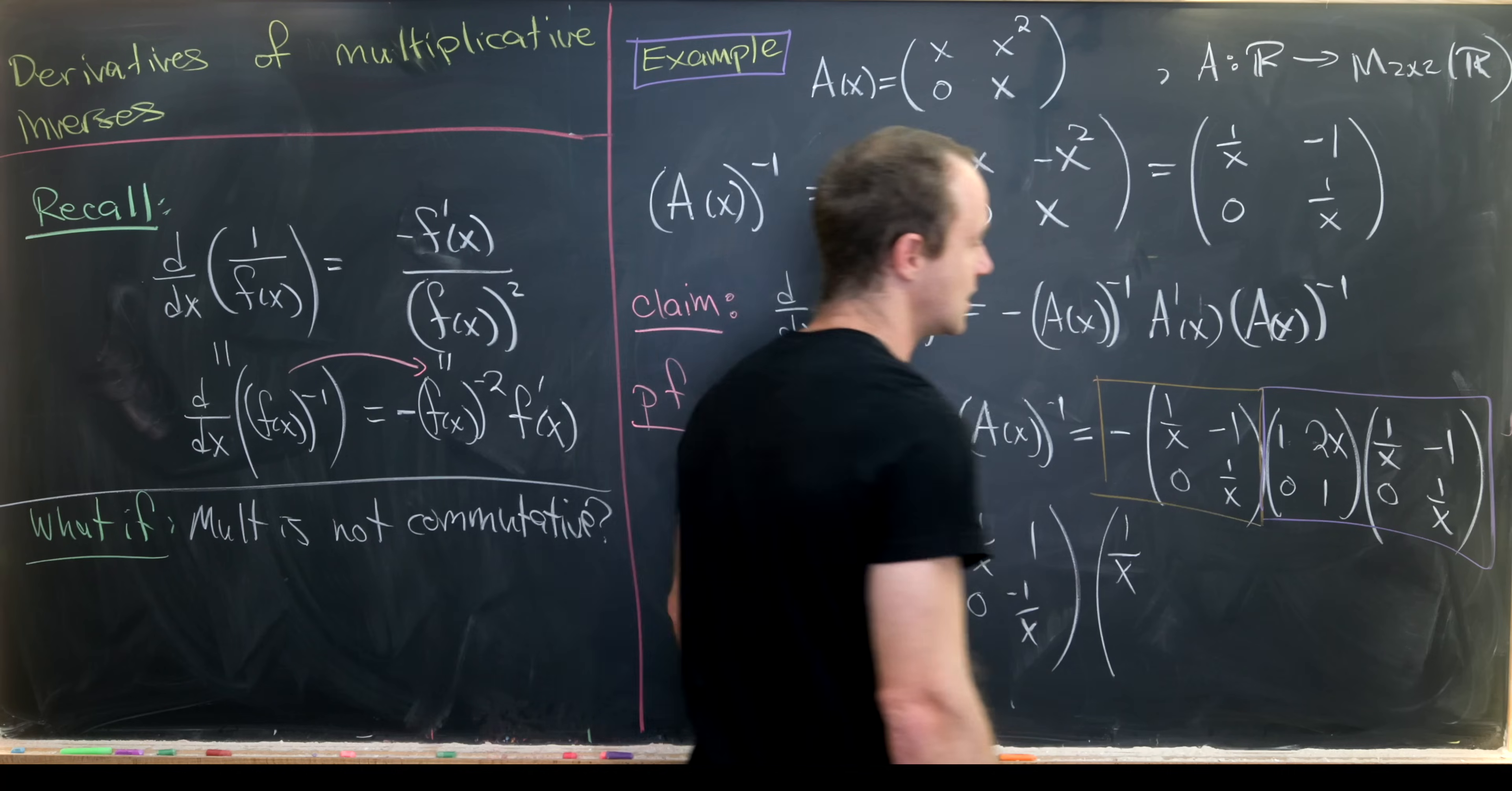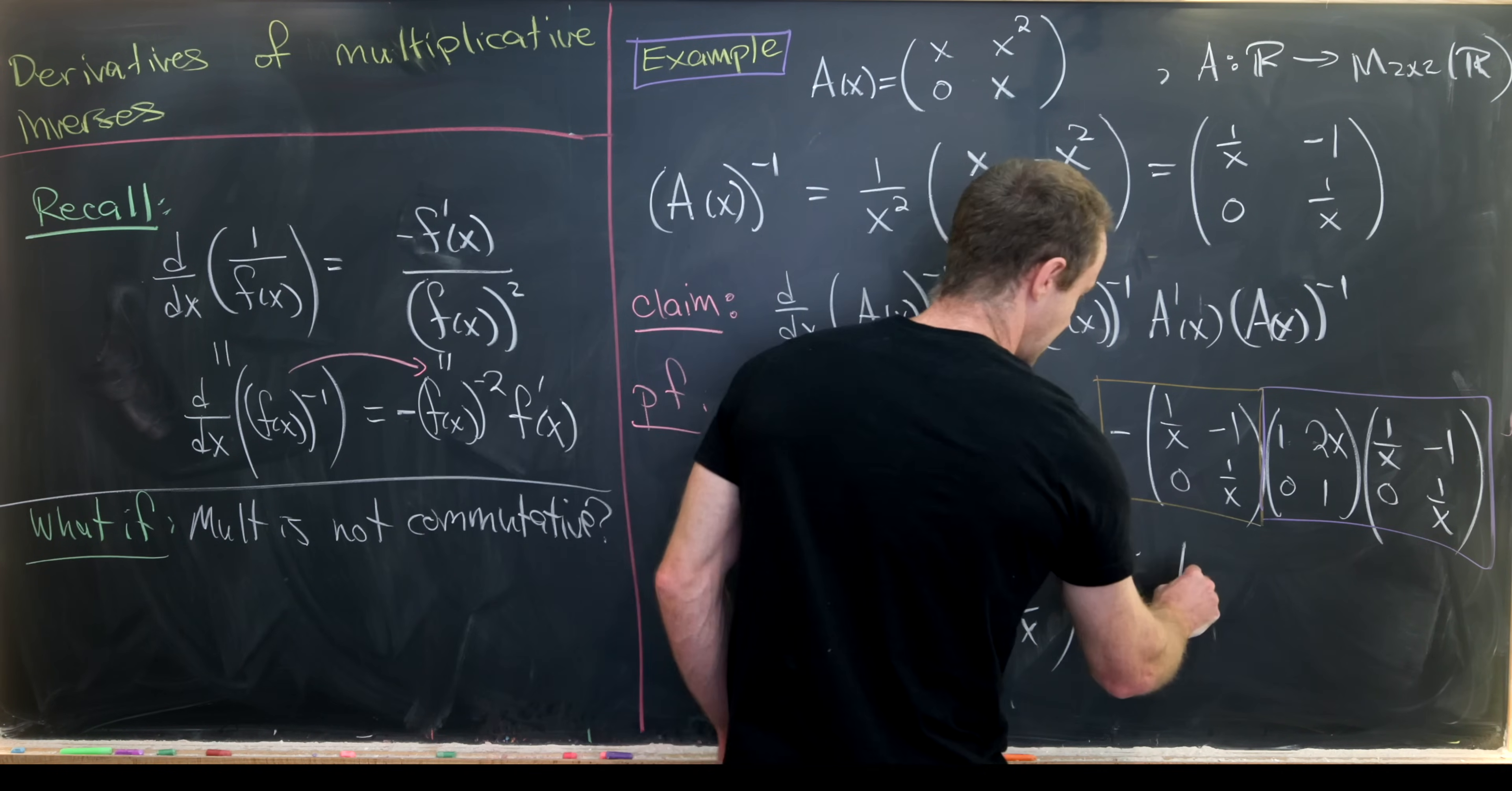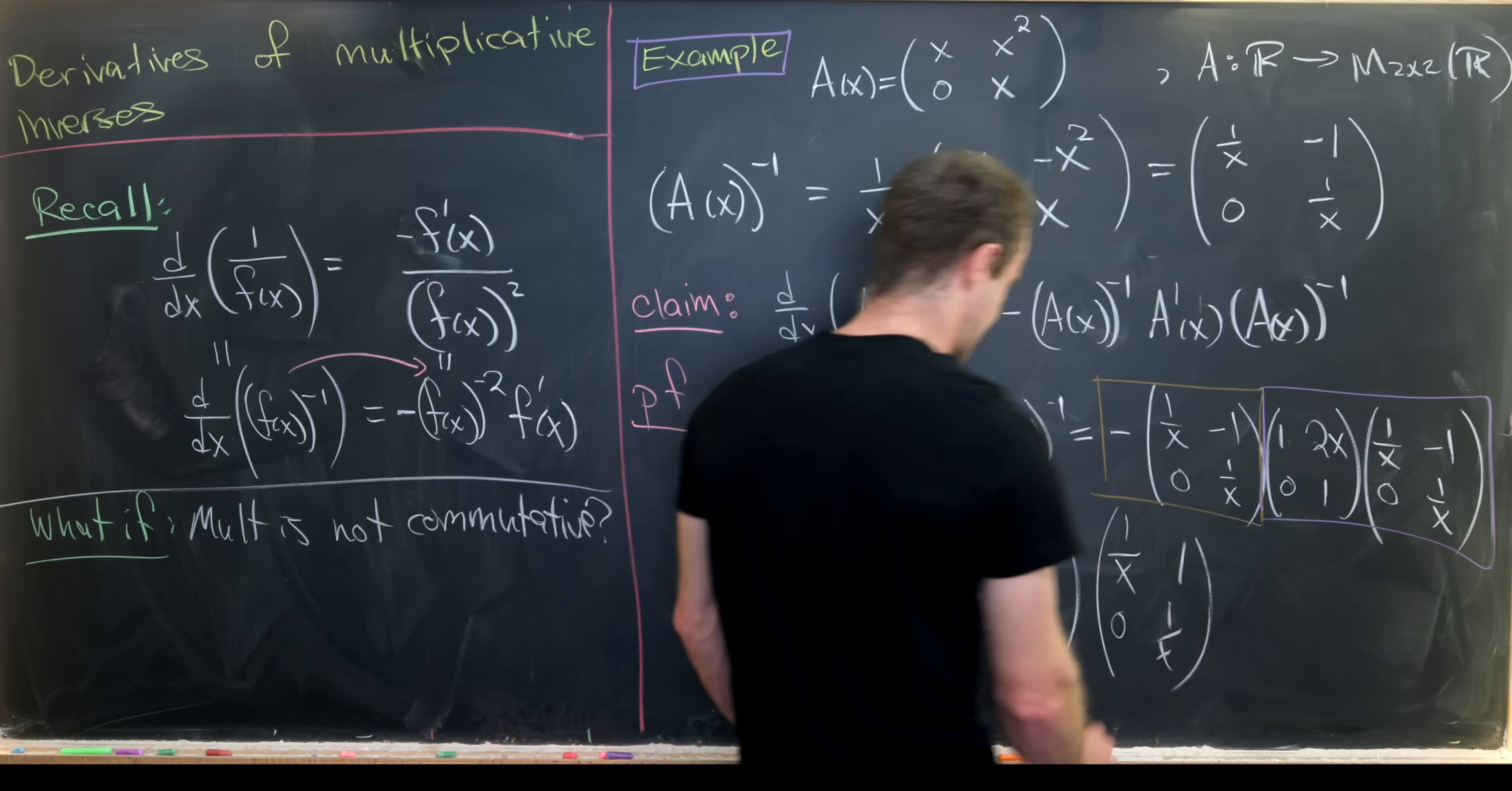Swiveling this in here will give me 1/x. Swiveling this in here will give me negative 1 plus 2, which is the number 1. Swiveling this in here gives me 0, and here I get 1/x.